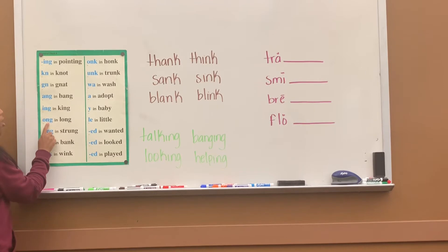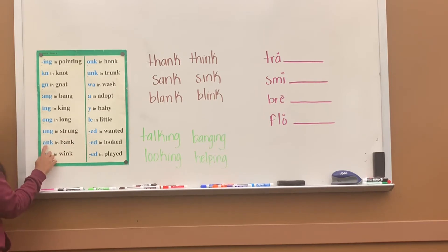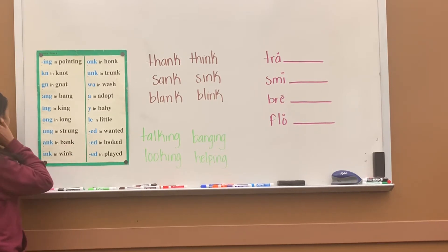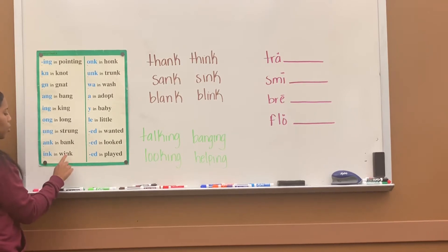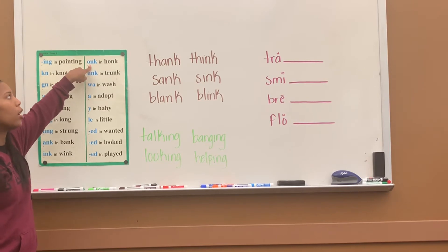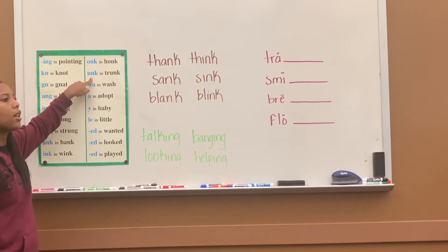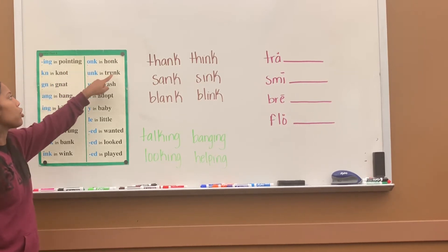O-N-G says 'ong' as in long. U-N-G says 'ung' as in shrunk. A-N-K says 'ank' as in bank. I-N-K says 'ink' as in wink. O-N-K says 'unk' as in honk. U-N-K says 'ung' as in shrunk.